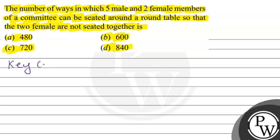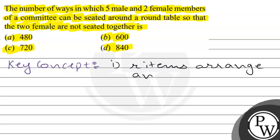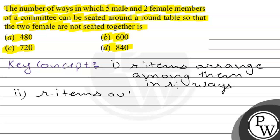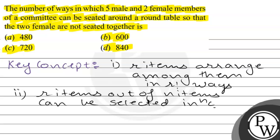I will tell you the concepts that will help us with this question. The first key concept is that r items can be arranged among themselves in r factorial ways. The second key concept is that r items out of n items can be selected in NCR ways.